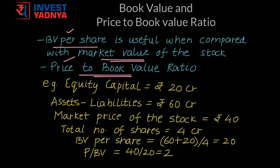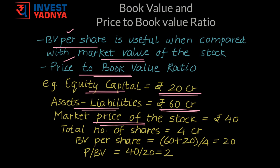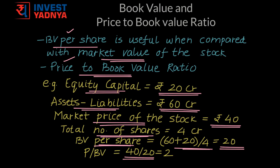Let us take an example. Assume there is a company with equity capital equal to 20 crore, and assets minus liabilities equal to 60 crore. The market price of the stock is Rs 40 and there are total 4 crore shares. The book value per share is calculated as (60 crore + 20 crore) divided by 4 crore, which gives a value of 20. When you divide the market price of 40 by book value per share of 20, you get a price to book value ratio of 2.